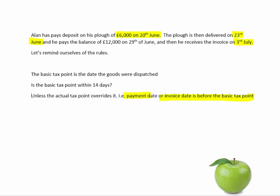However, he did actually pay the balance before he received the invoice. He paid the balance on the 29th of June, so the second tax point will be the 29th of June. So we've now got two tax points: one on the 20th of June and one on the 29th of June.